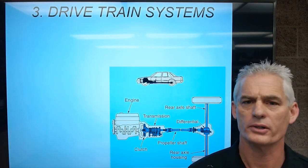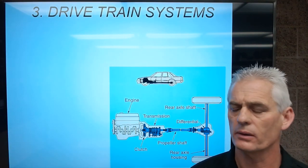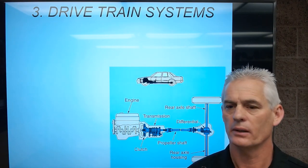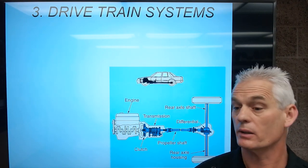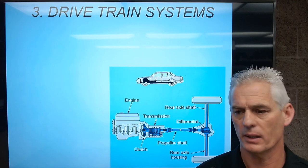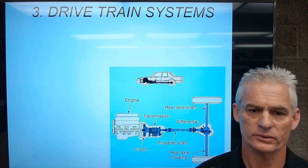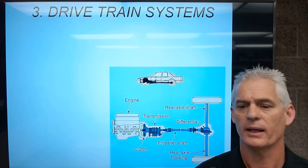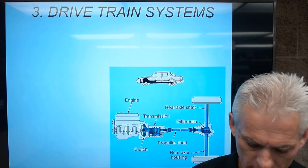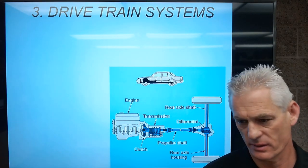Here's the beginning of part two of auto systems and we're going to be looking at drivetrain systems. So we talked about the drivetrain components — transmissions, automatic and manual, driveshafts, axles, wheels, tires — and now we're going to talk about different layouts of drivetrain systems.